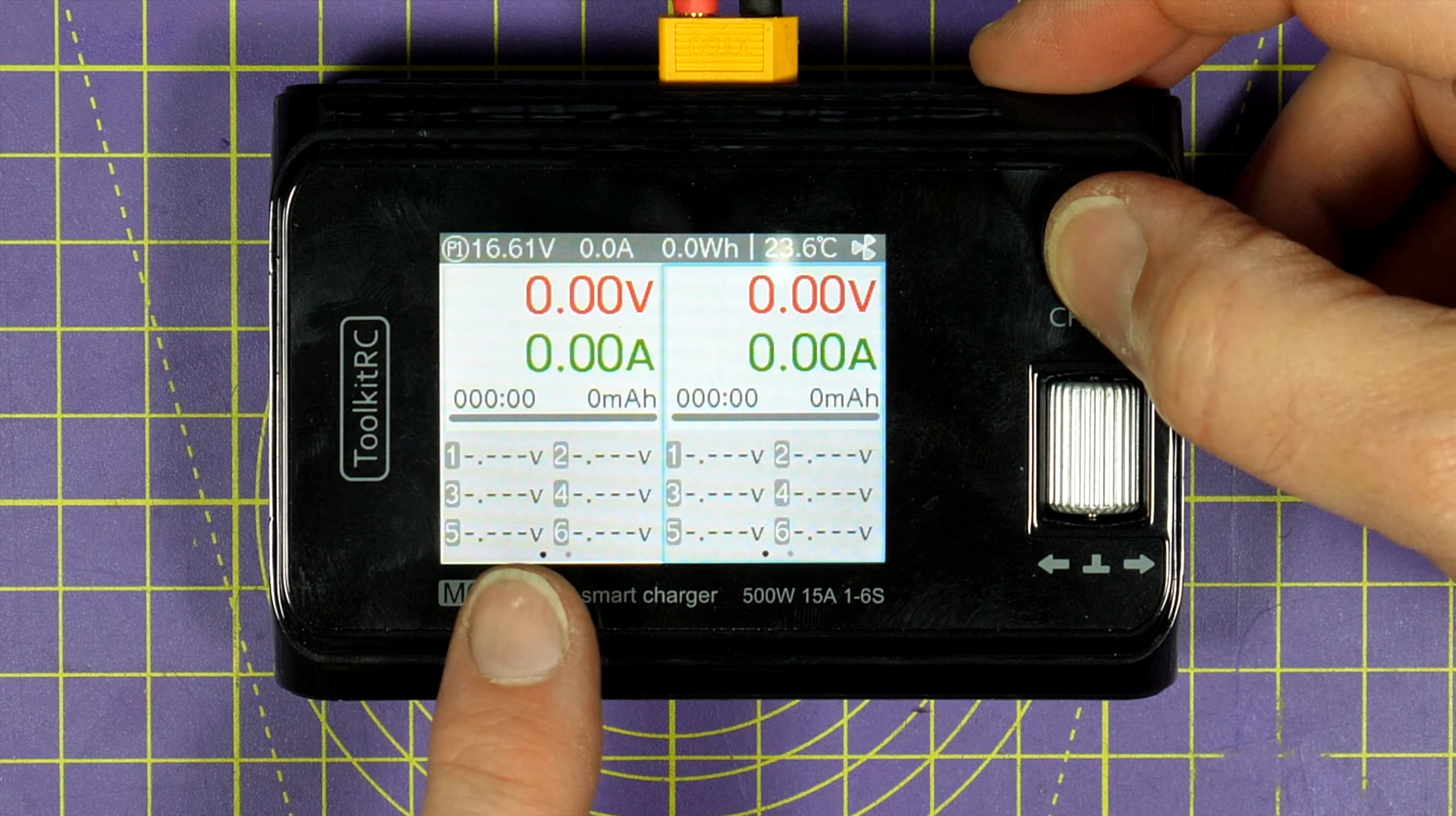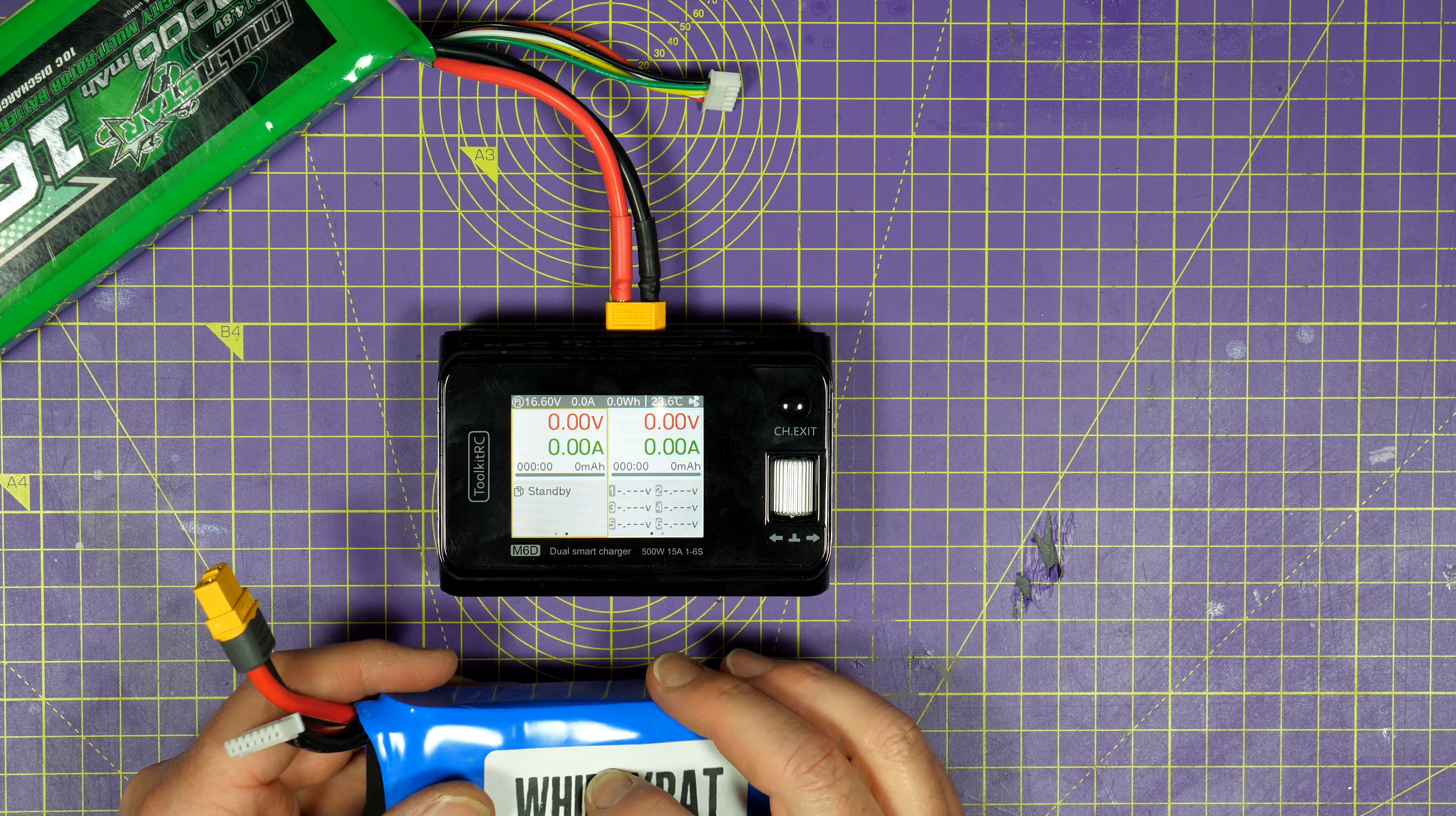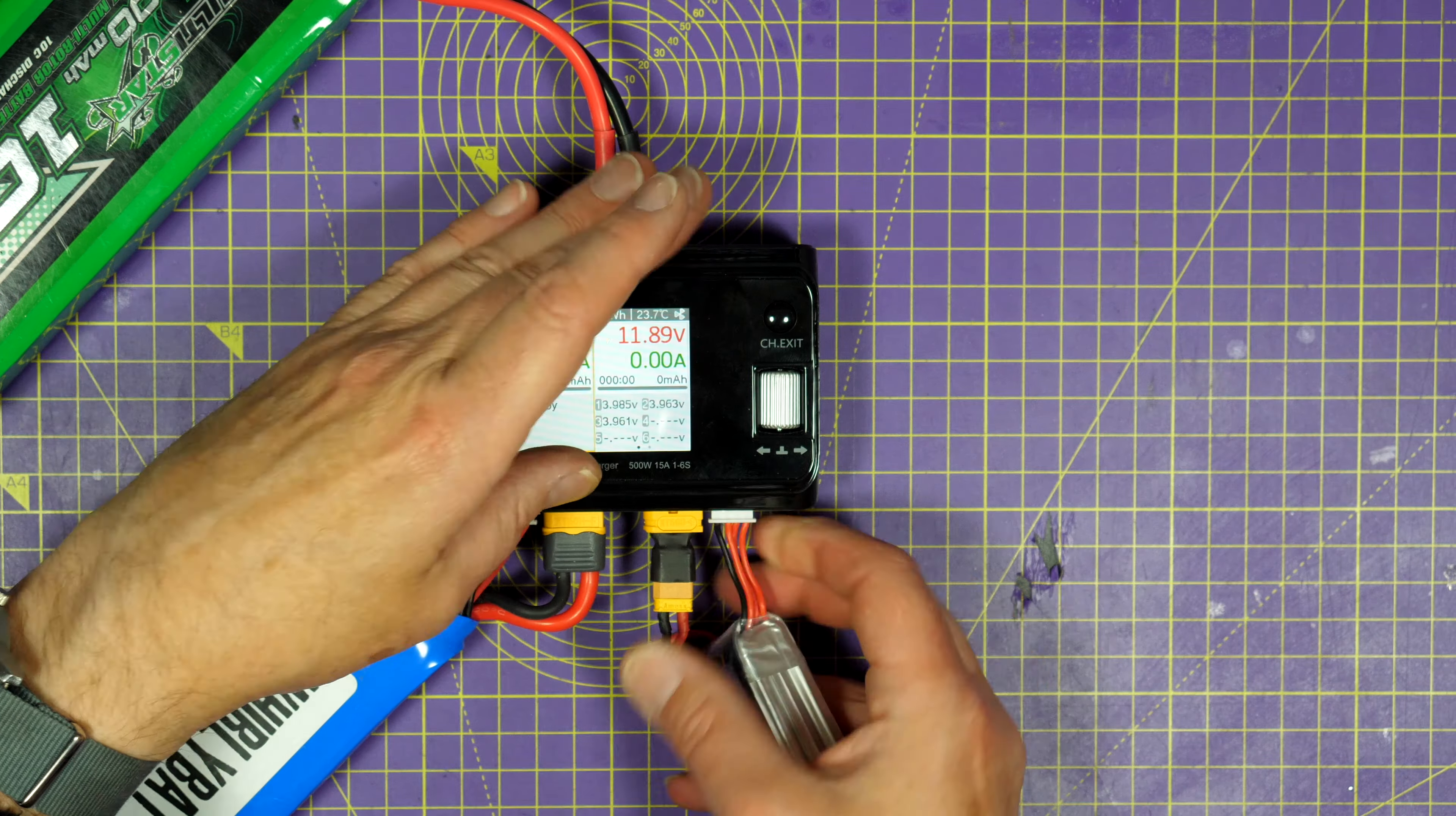That's on dual, that's on single, so one, two, dual. So I'm going to use channel one and I'm going to charge this 6s lithium ion pack. And that needs 25.2V. And then we are going to charge on the other channel this 3s LiPo. And that needs 12.6V. There we go.